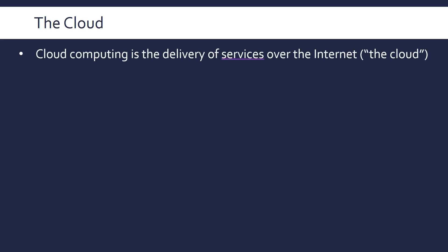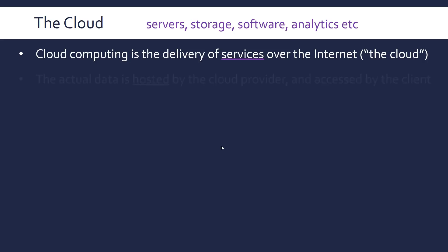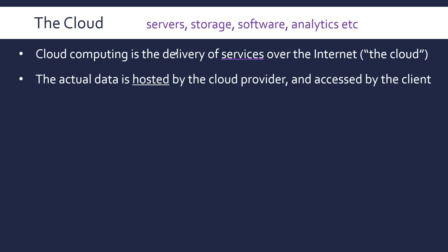Cloud computing is the delivery of services over the internet, which in this case is the cloud. Cloud is obviously a very generic term, and it's usually implied that you're talking about services like servers you can use, storage like cloud storage, software through web applications, and things like analytics which businesses use over the cloud. The actual data for all of these services is stored by the cloud provider, and you access it in a client-server relationship through some kind of interface over the internet.